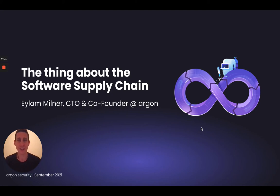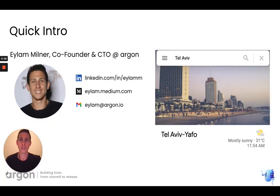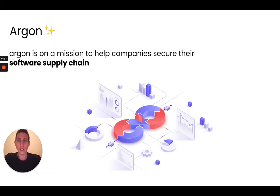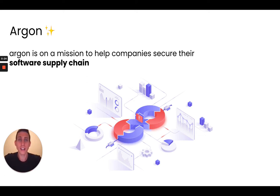Hi everybody, it's great to be here. My name is Eilan, I'm the CTO and co-founder of Argon, and today I want to talk about the software supply chain. This is me, coming to you today from Tel Aviv. Argon's mission is to help companies release software securely, meaning we help protect each and every phase of their software supply chain.